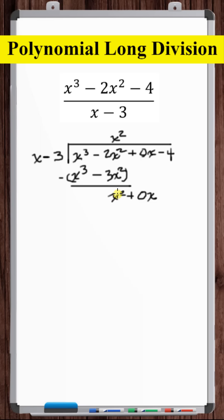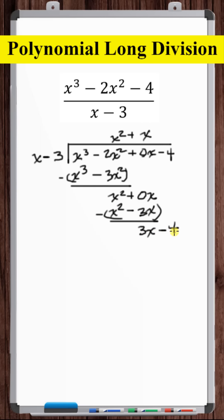Now repeat the same process. Divide this term x squared by the largest order term in the divisor. Write that above the x term. Now multiply by the divisor. 3x divided by x is 3. Multiply. So we have a remainder of 5.